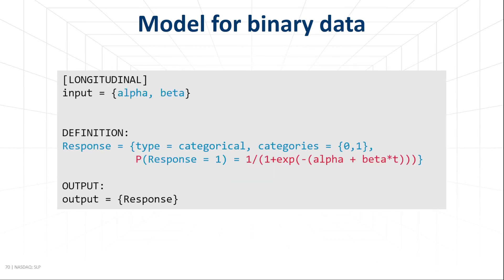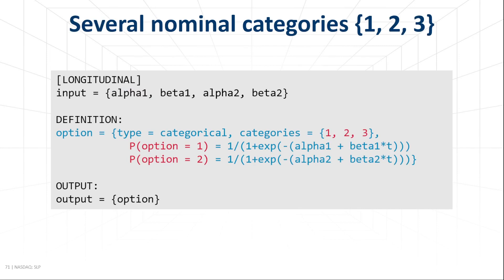We use logit because it takes values from minus infinity to plus infinity, which is convenient in the estimation. But it is also possible to define the probability directly, for example using the logistic function. Now, if we have three categories with no sense of direction, we need to define two probabilities — the third is defined implicitly as explained. The formulas contain individual parameters specific for each category: alpha_1 and alpha_2 for intercepts, and beta_1 and beta_2 for the effect of time.